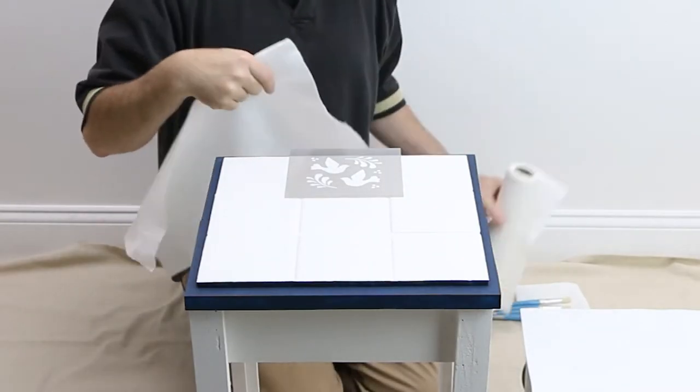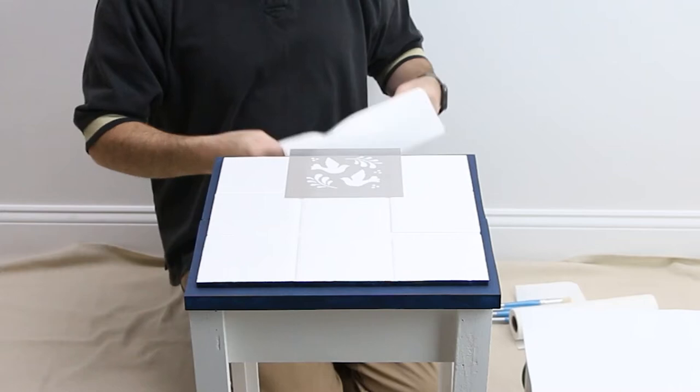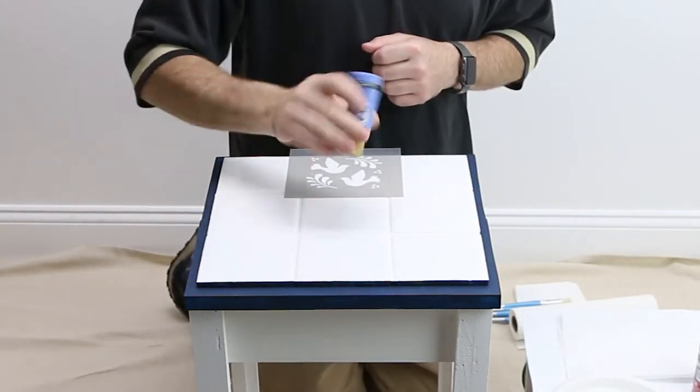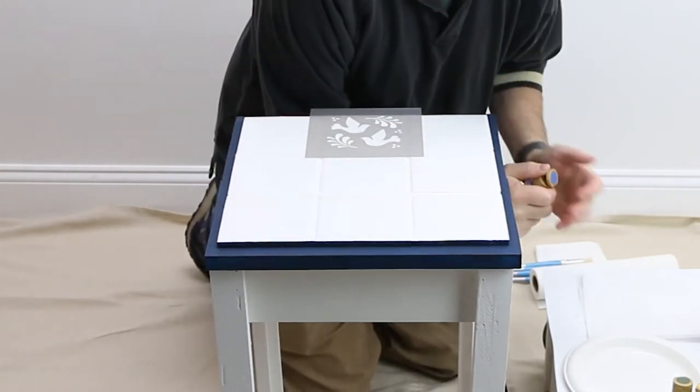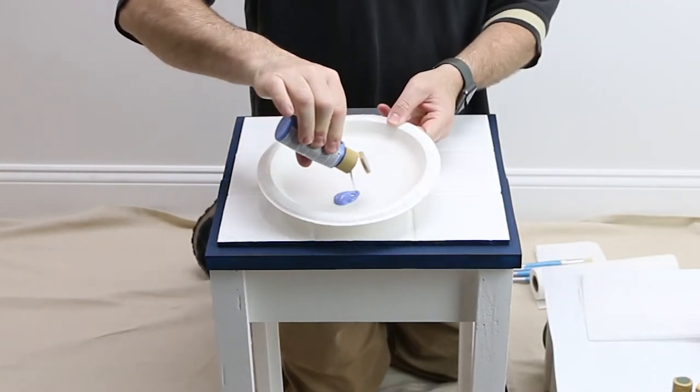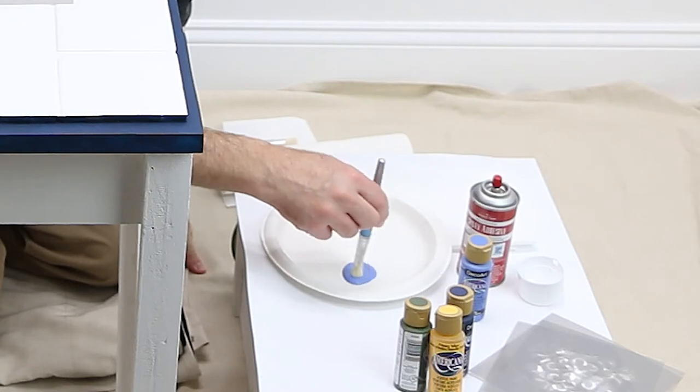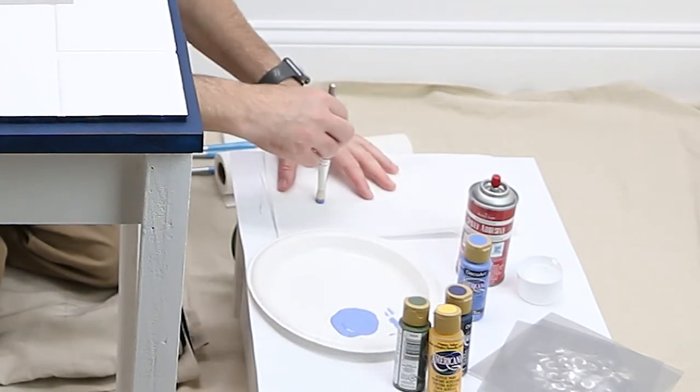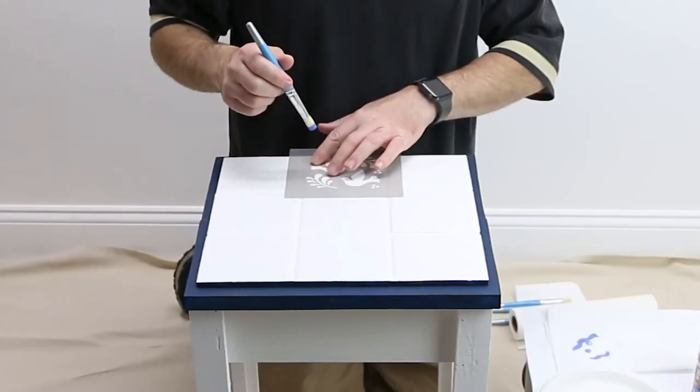Keep a roll of paper towels handy. Shake each bottle of Americana acrylic paint prior to use. Pour out a small amount on a paper plate. Soak the brush bristles with paint and remove excess using the edge of the plate. Remove more paint using a folded paper towel.